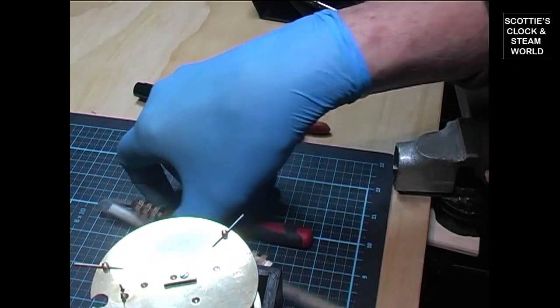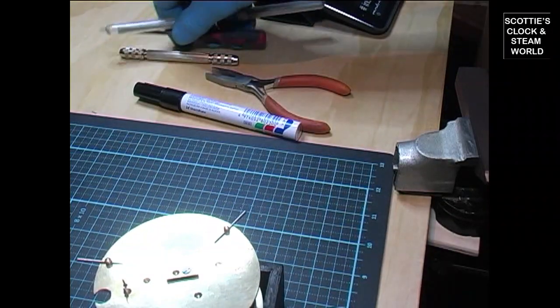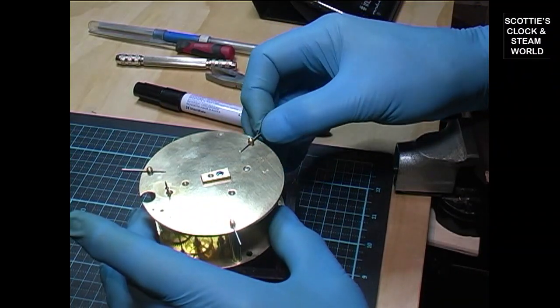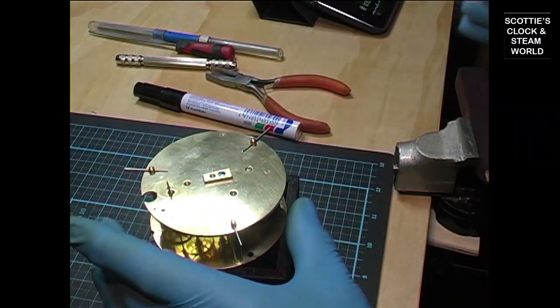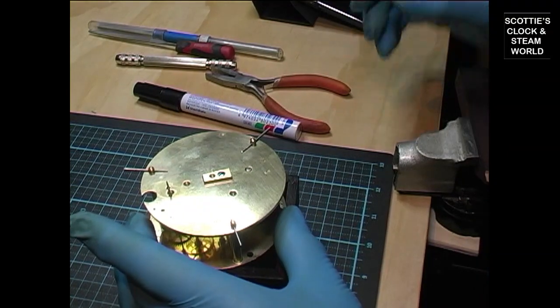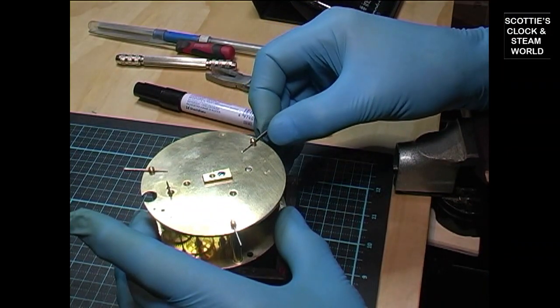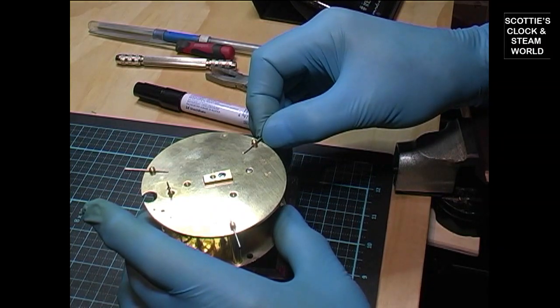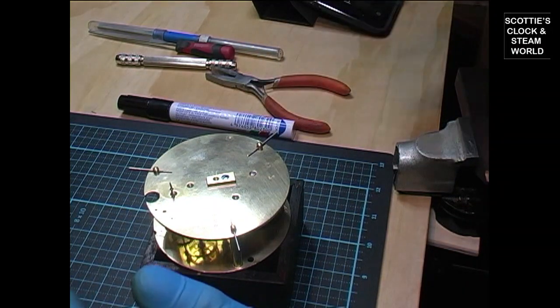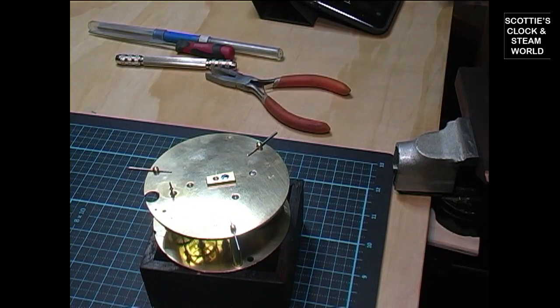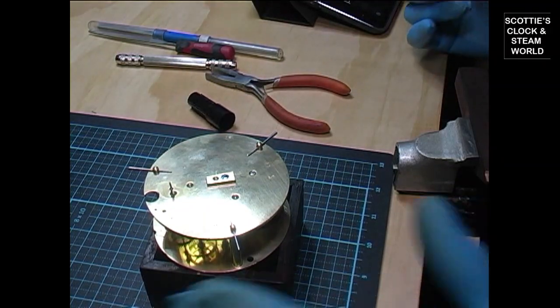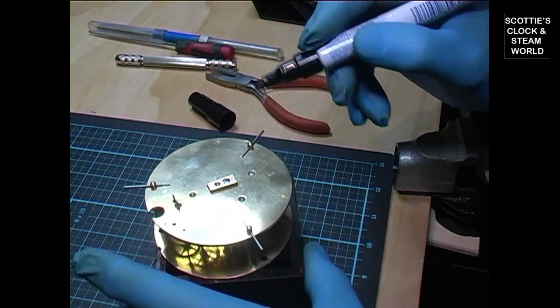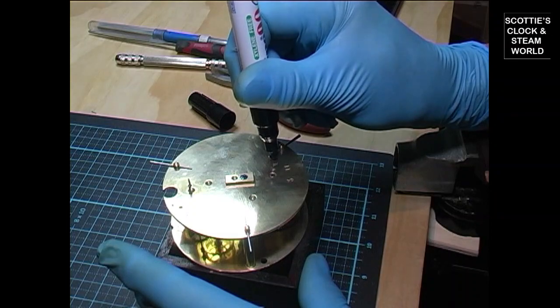First we select the correct size tapered pin to fit into the post. It's a 0.8 to 1.8mm pin. Insert the pin. Using a marker pen, mark a point approximately 6mm or over a quarter of an inch, either side of the post.